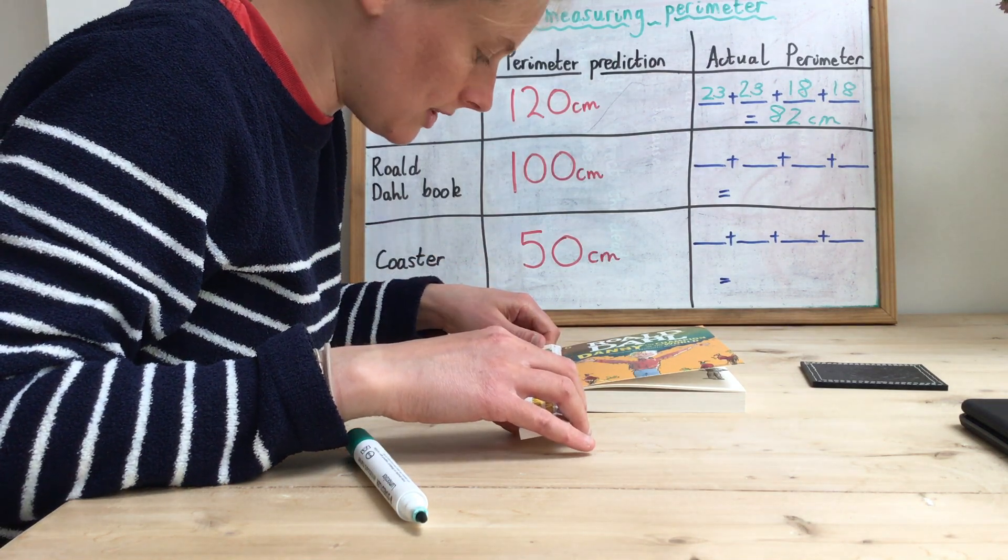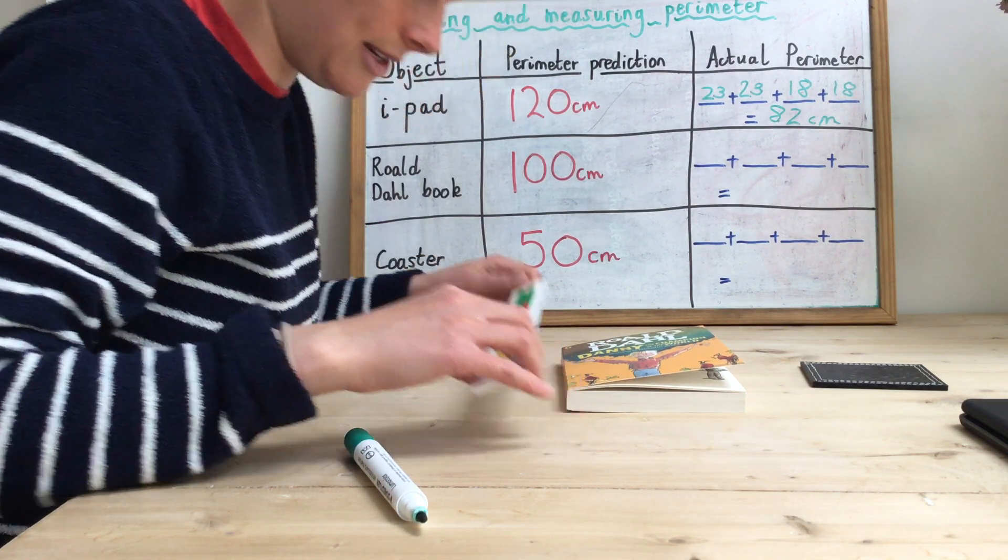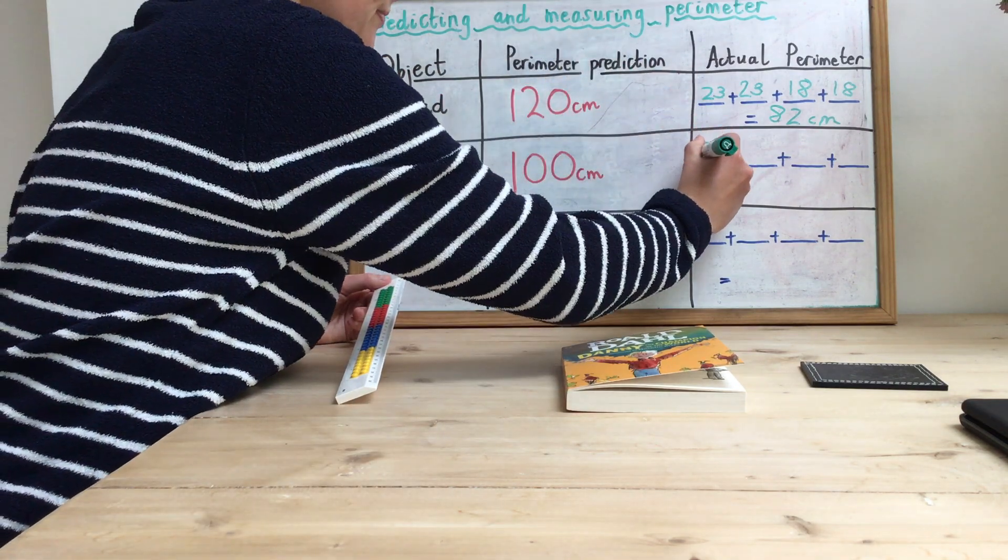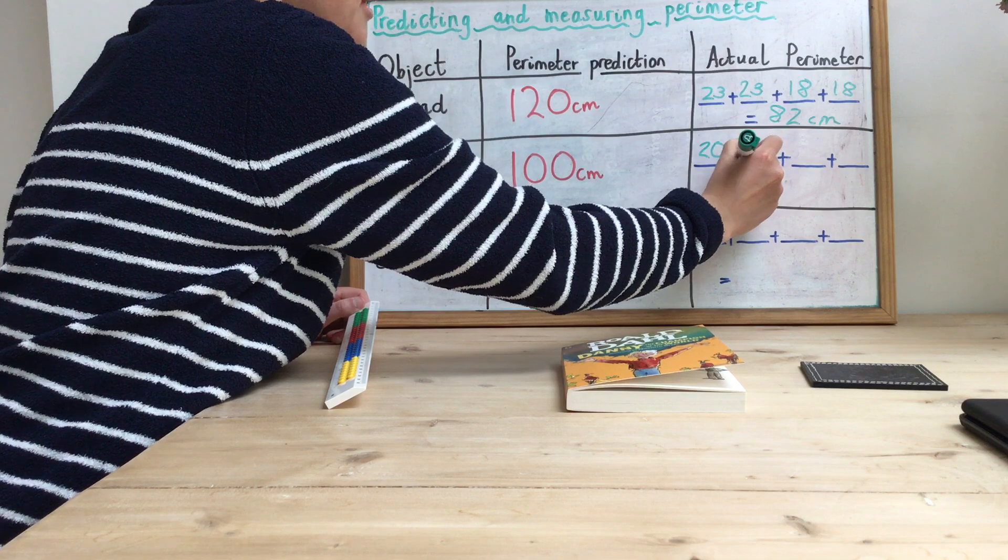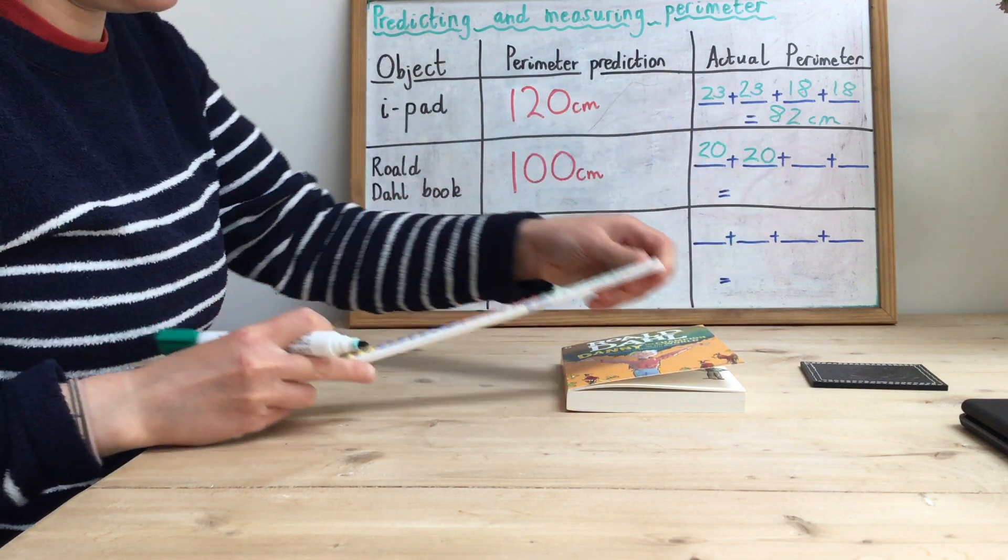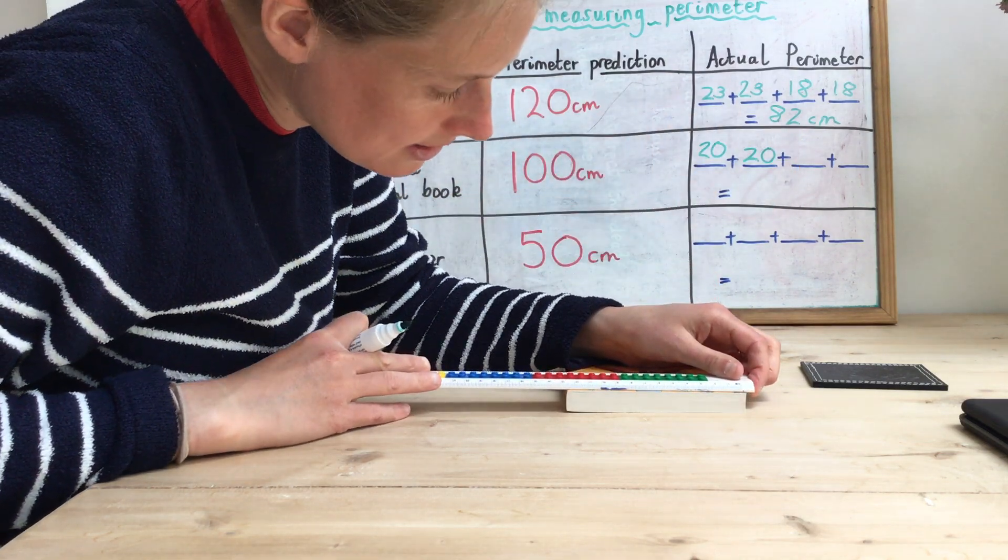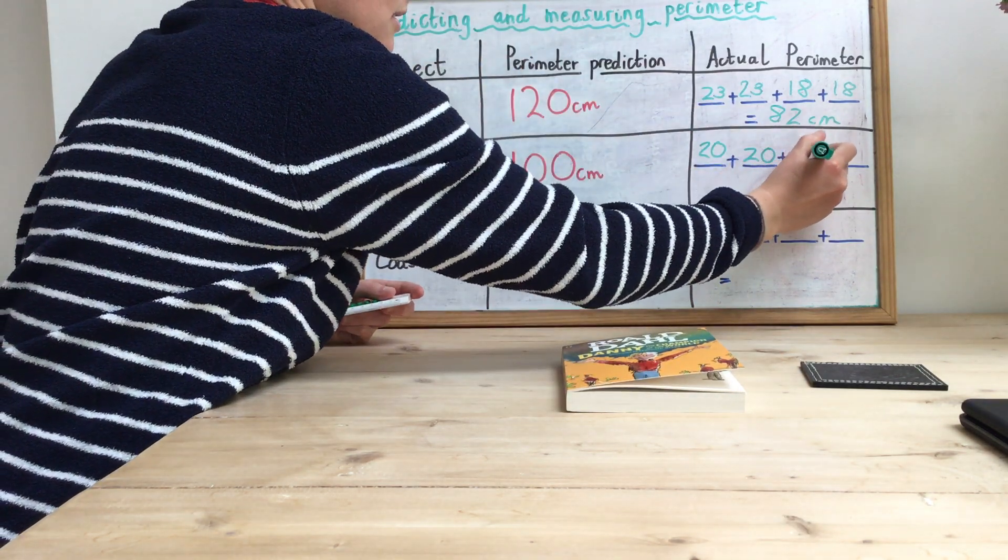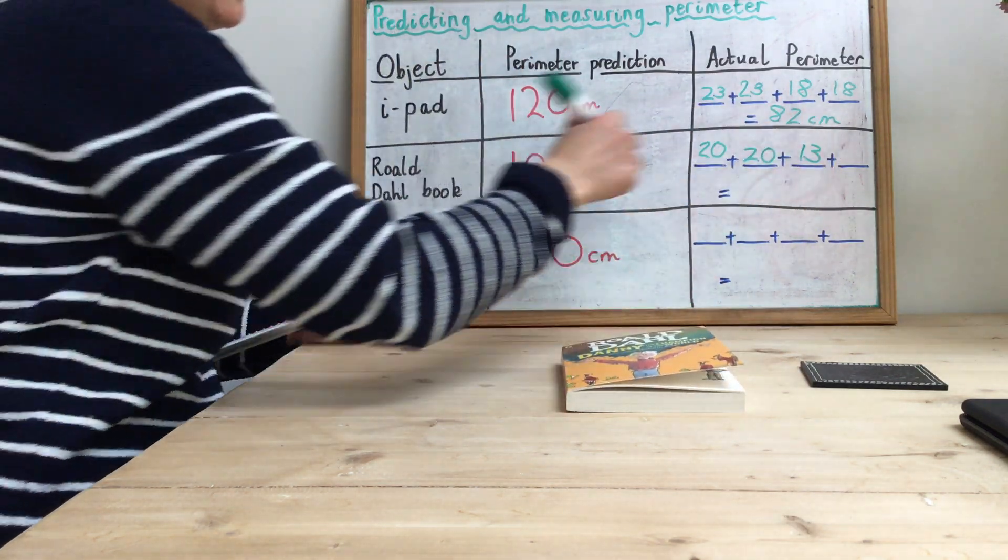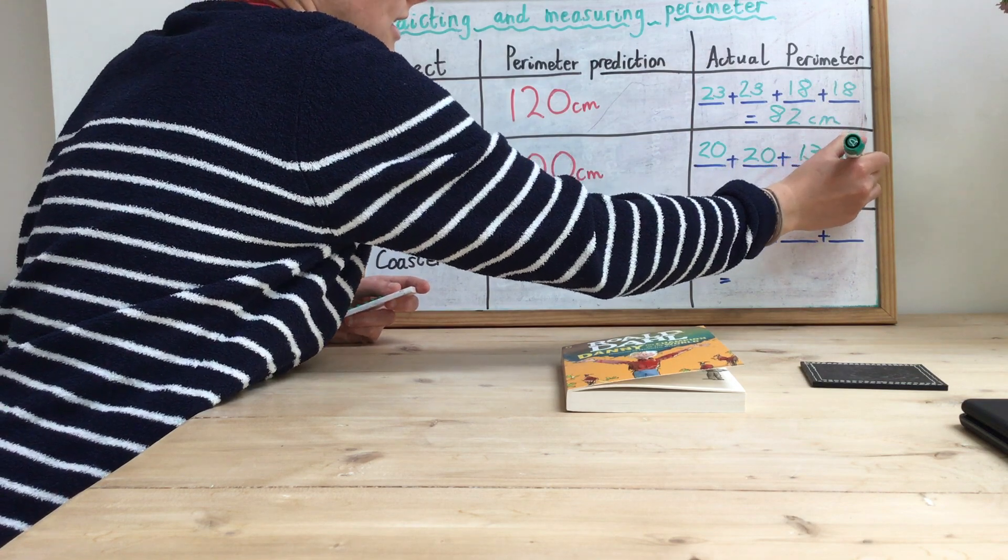So the long side, I've got 20 centimeters. That means this side as well will also be 20. And the short side, I've got 13 centimeters, which means that this side here will also be 13 centimeters.